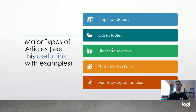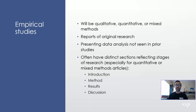Empirical studies or original research are probably what you'll see the most. These are simply reports of original research — researchers devised a study, collected data, analyzed the data, and reported it. They can use any research method, and papers usually, especially in quantitative research, have clearly labeled sections: an introduction, a method section, a results section, and a discussion. If I actually conduct and publish my study on what GGC students think about face-to-face versus virtual learning, that would be an empirical study.